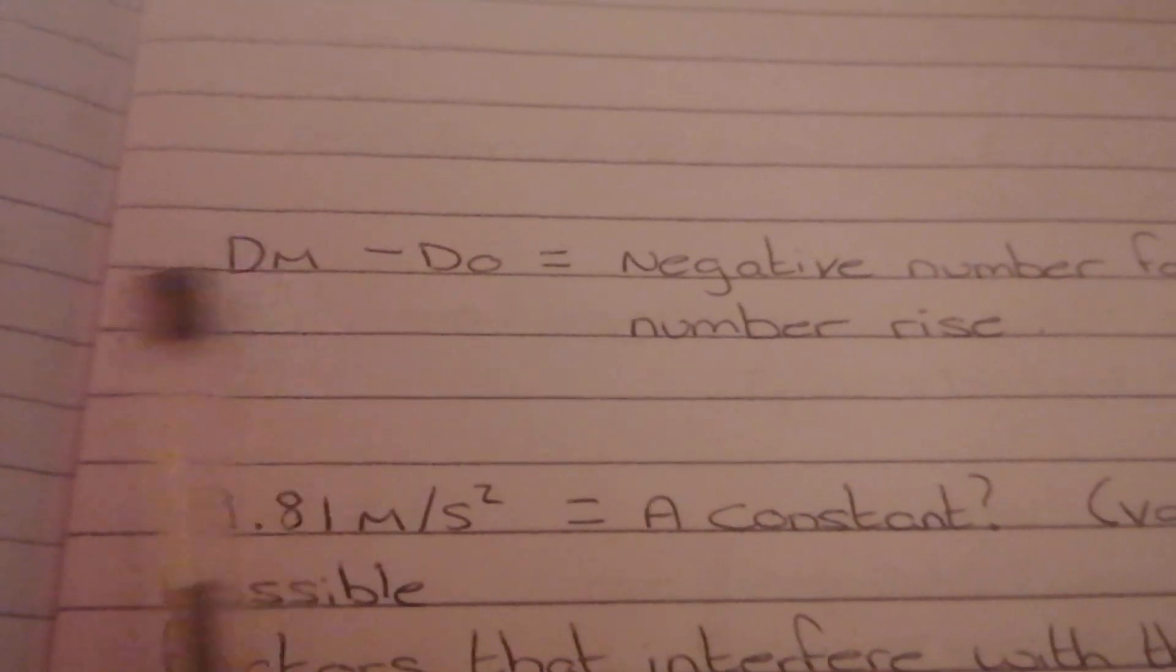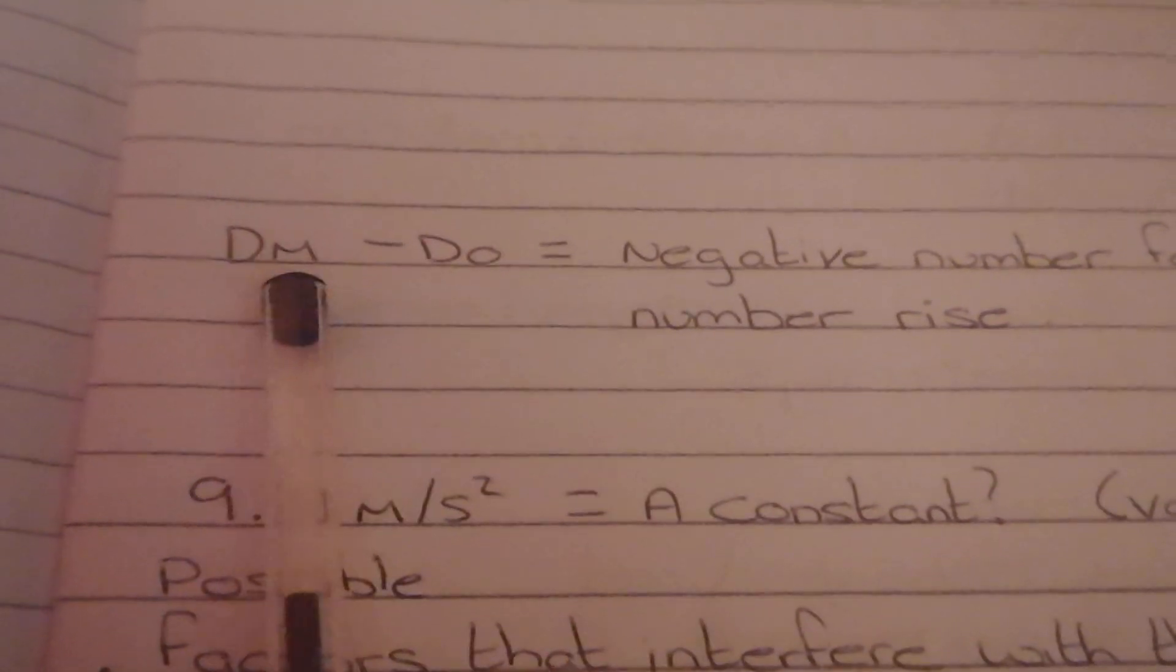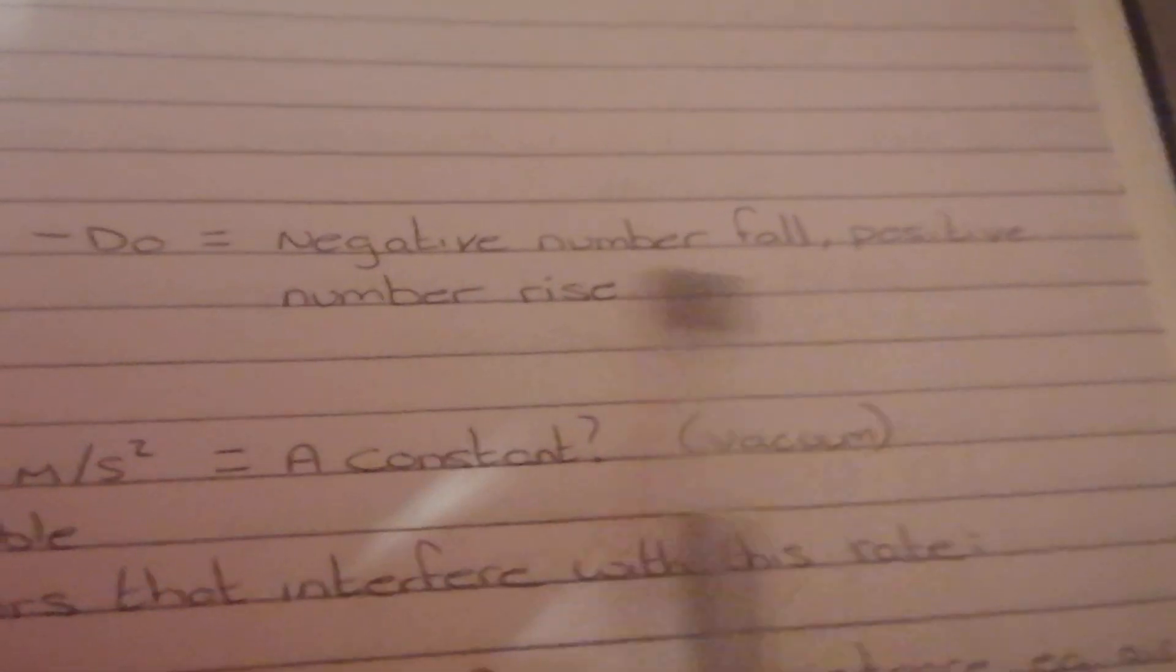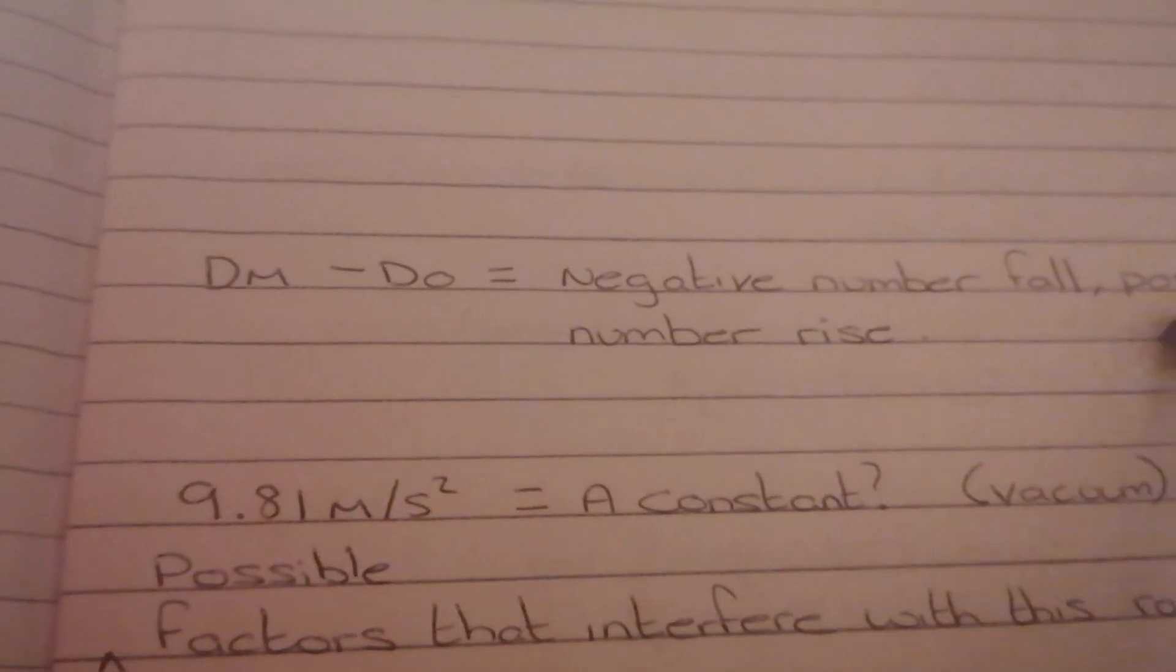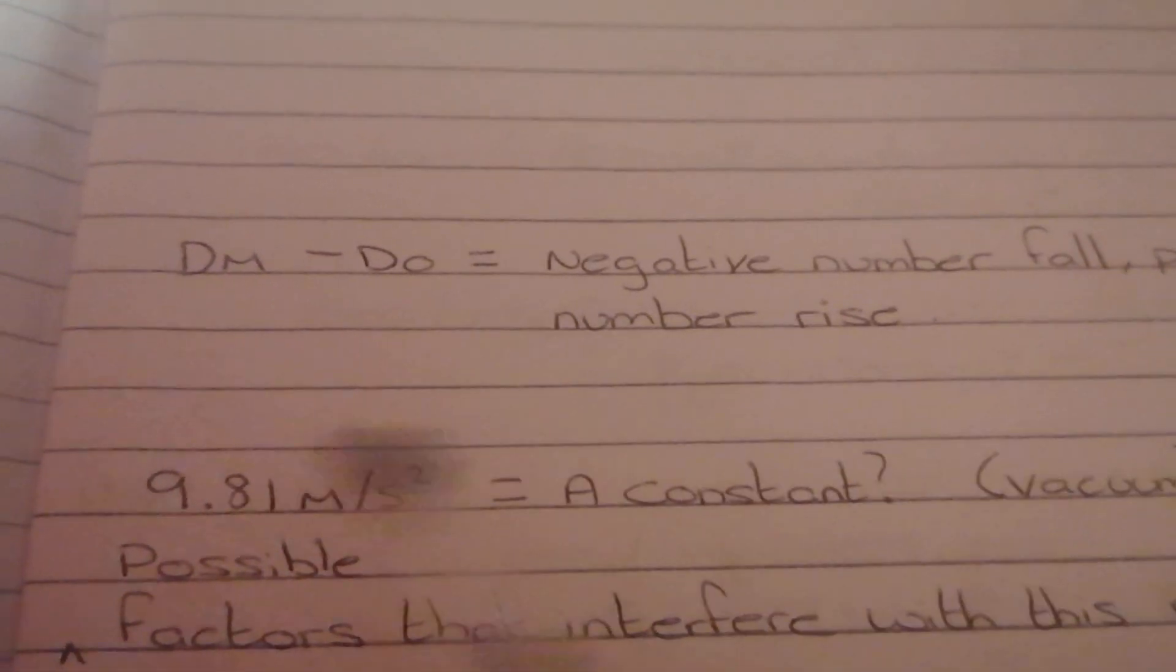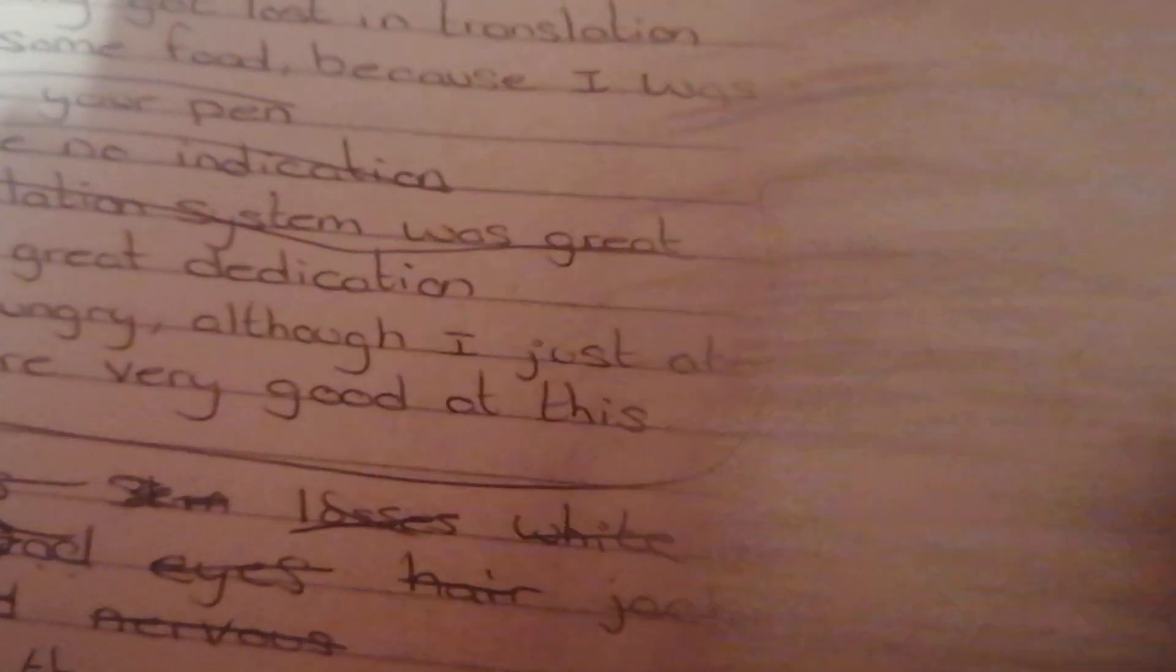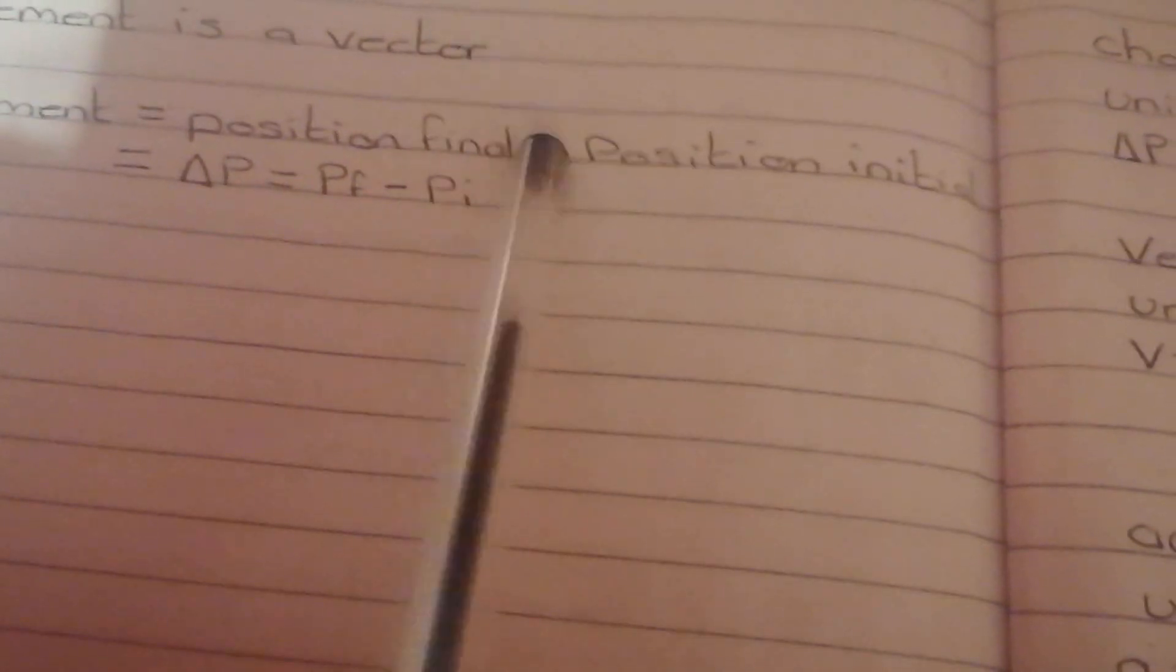So then I came up with the equation again for another vector. So the density of the medium minus the density of the object. If it's a negative number it will fall, if it's a positive number it will rise. So again this gives you a vector because it tells you whether it will rise or fall. As well as the displacement which for 100% is a vector.